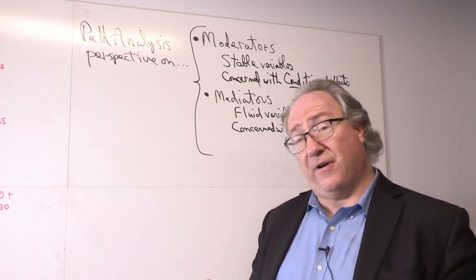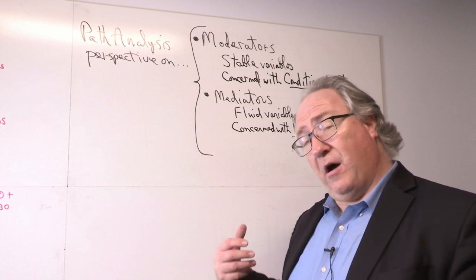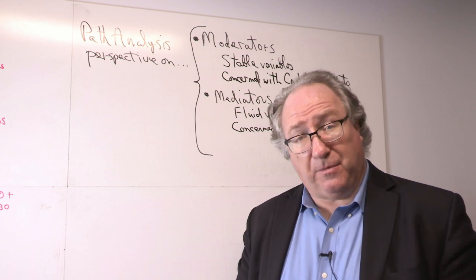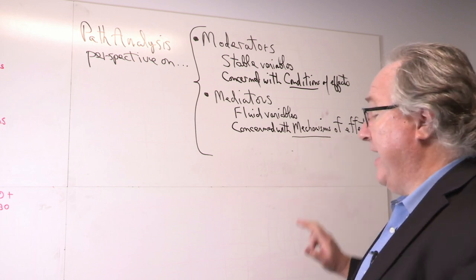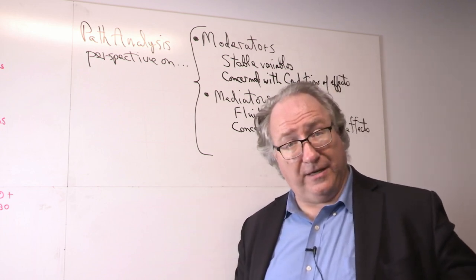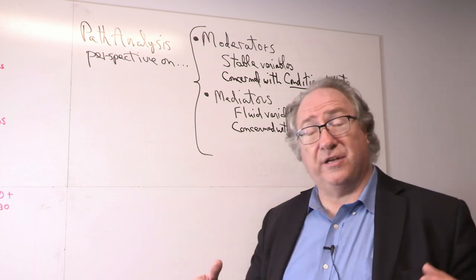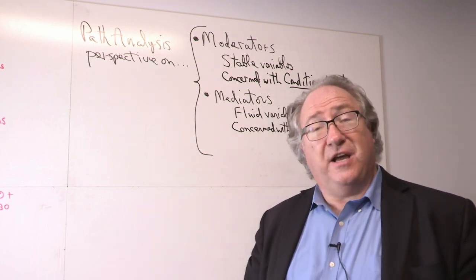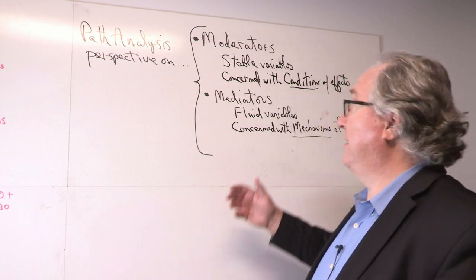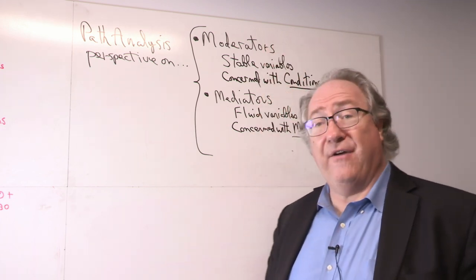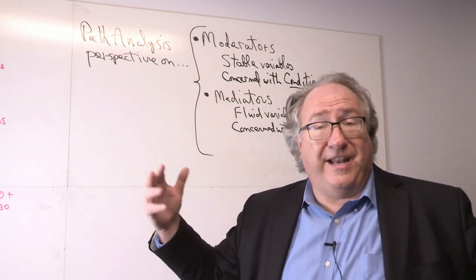As we identify more mediators — more variables that mediate the effect of a particular variable on a dependent variable — we learn more about the mechanism of the effect. With mediation, we're concerned with mechanisms of effects. In a kind of spoof, we once talked about seven things moderation and mediation have in common, but those seven things just had to do with letters they share, because in fact moderation and mediation have nothing in common beyond their names.